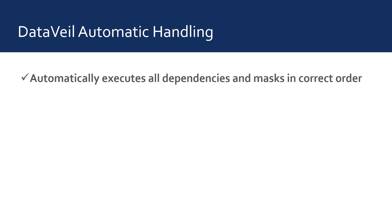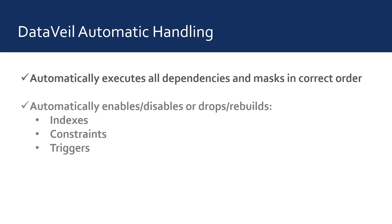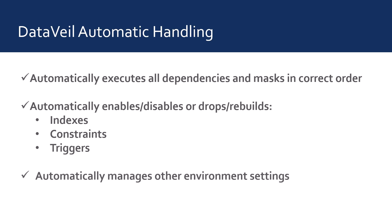Do I need to disable triggers, foreign keys, constraints, and so on? And the answer is no, the user doesn't do any of that. DataVal automatically disables, drops, and enables or rebuilds all affected indexes, constraints, triggers, and other database settings. All the user needs to do is simply create the masks and DataVal will take care of the rest.